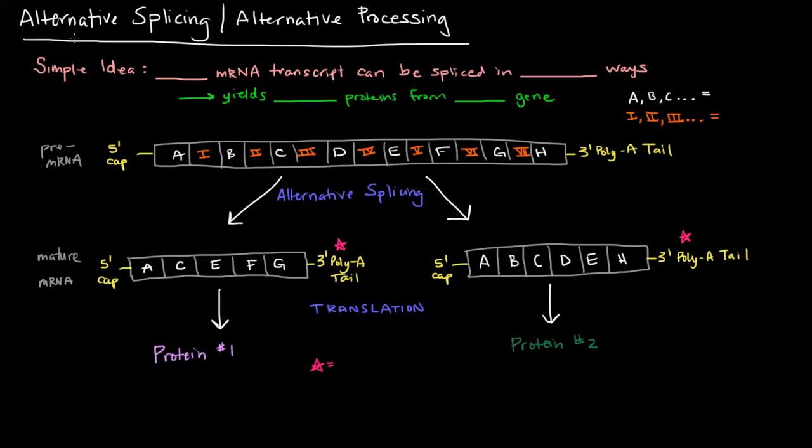In this video I want to talk about what alternative splicing is. Alternative splicing, otherwise known as alternative processing, is the simple idea that the same mRNA transcript can be spliced in different ways.